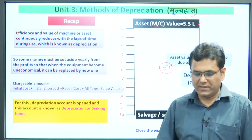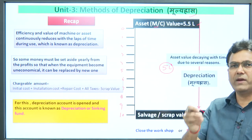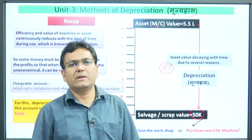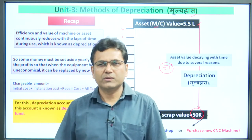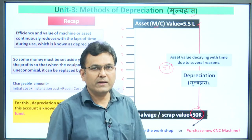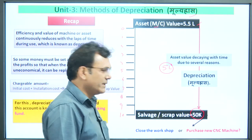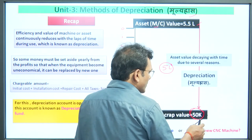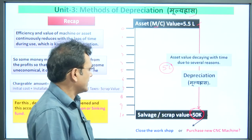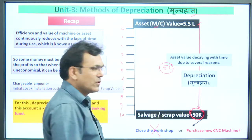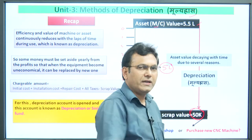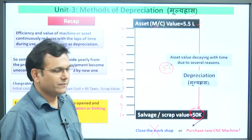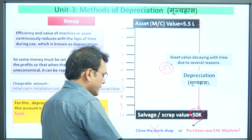No doubt, during this duration we earned profit, but alongside that the machine value kept decreasing. If a businessman takes all profit for personal use, at the end of 10 years he will have only 50,000 rupees left — not enough to purchase a new machine. Another option is to close the workshop, but we will not close our business.